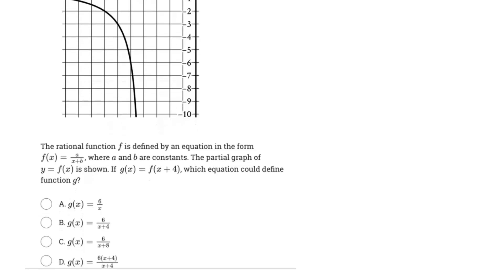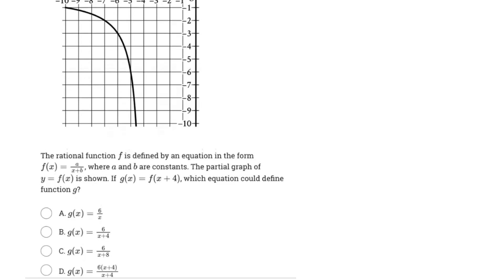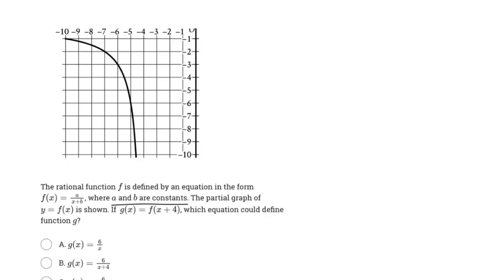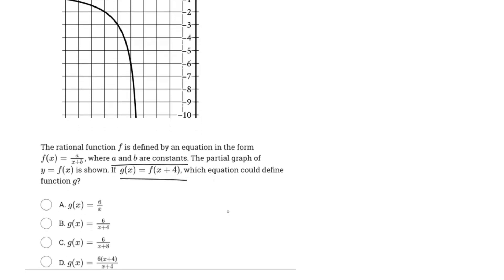This problem says the rational function f is defined by the equation f(x) = a/(x+b), where a and b are constants. The partial graph of y = f(x) is shown. If g(x) = f(x+4), which equation could define the function g?